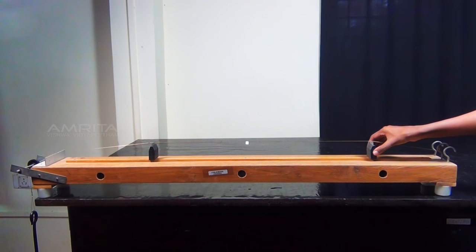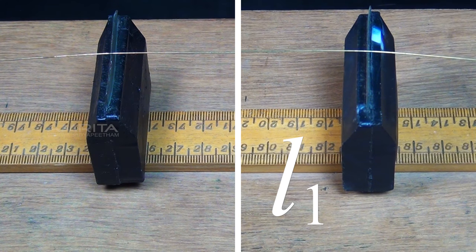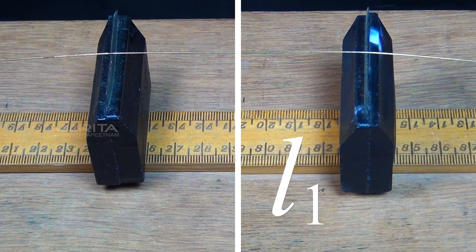At a certain length, the string vibrates vigorously and the paper rider falls, which shows the condition of resonance. Measure the length L1 of the string between the bridges using the meter scale.